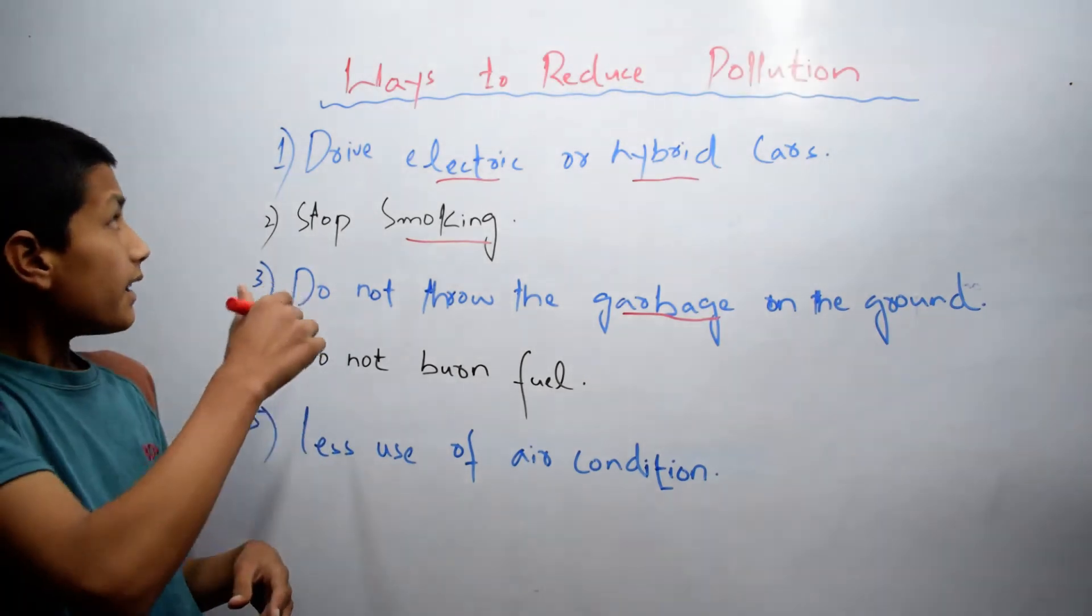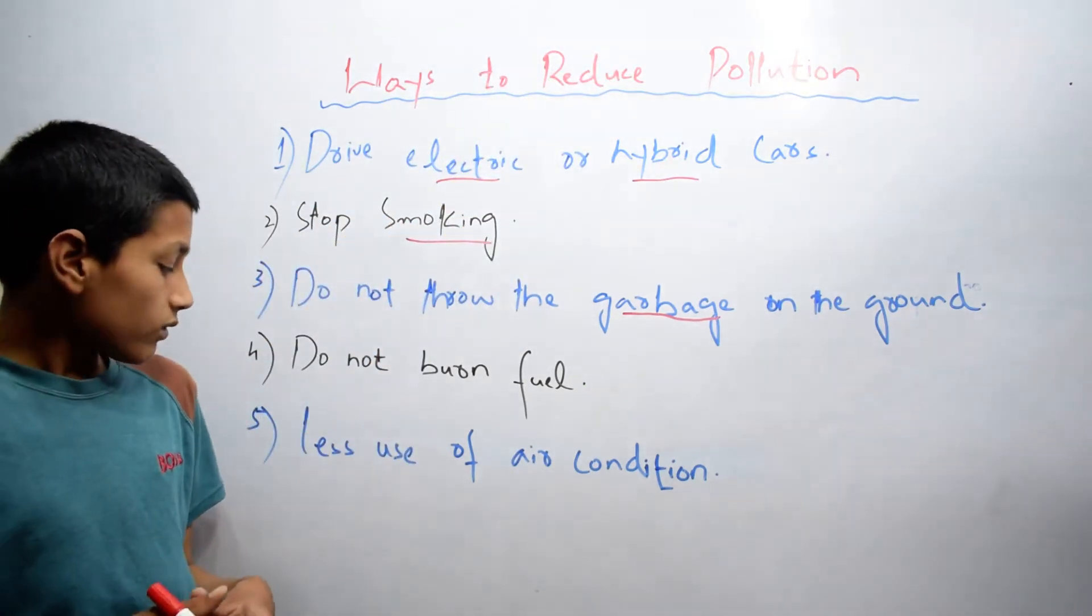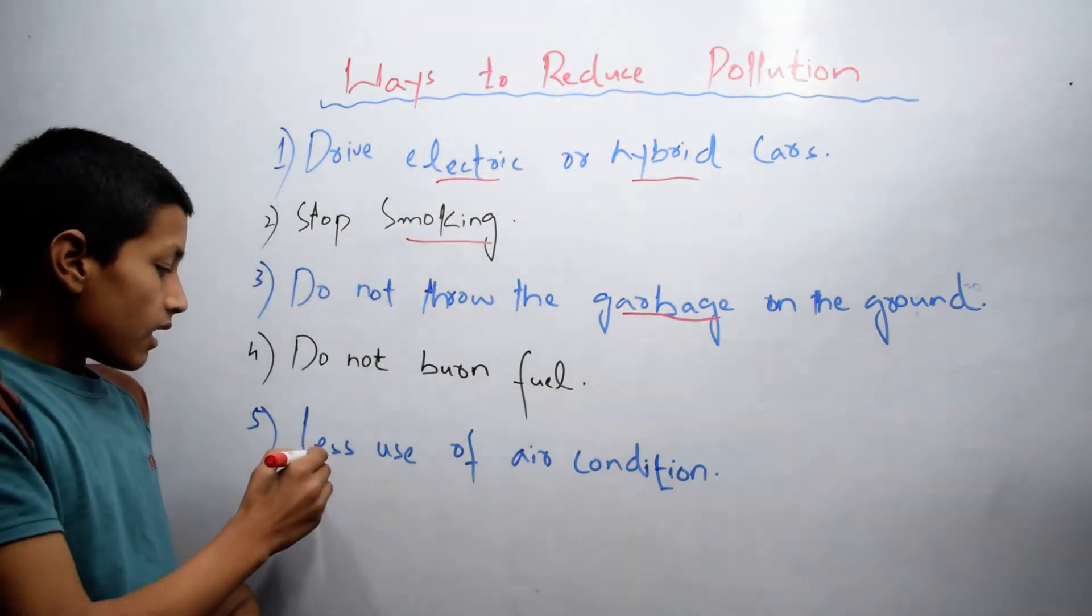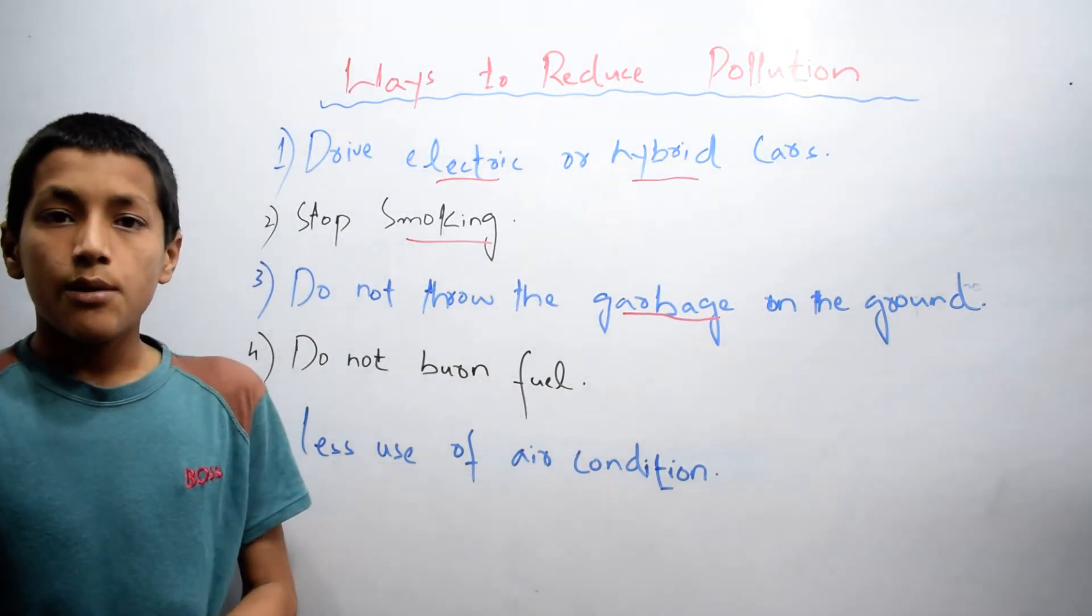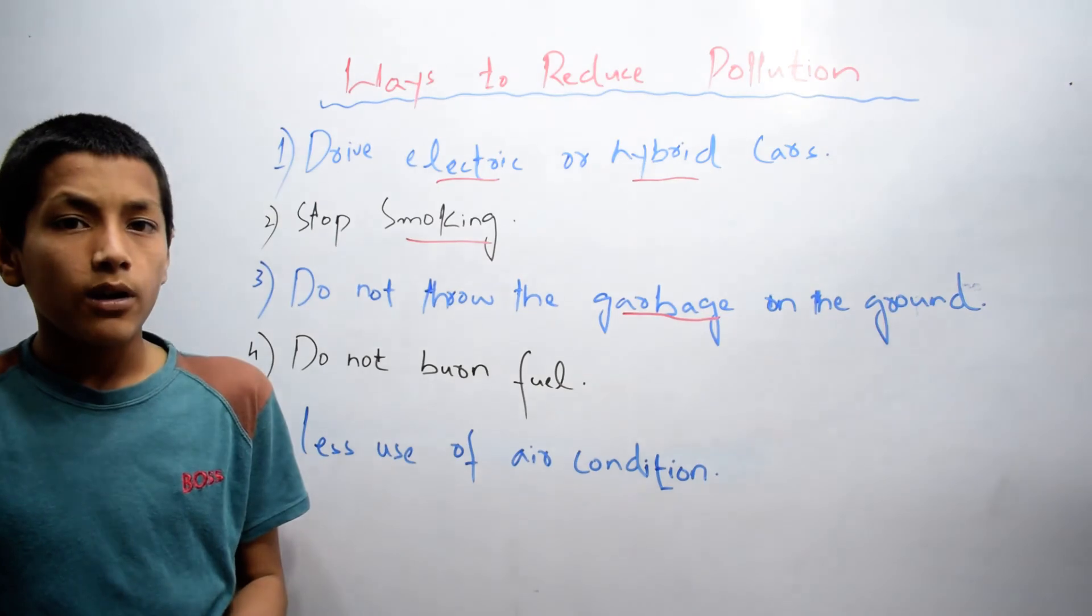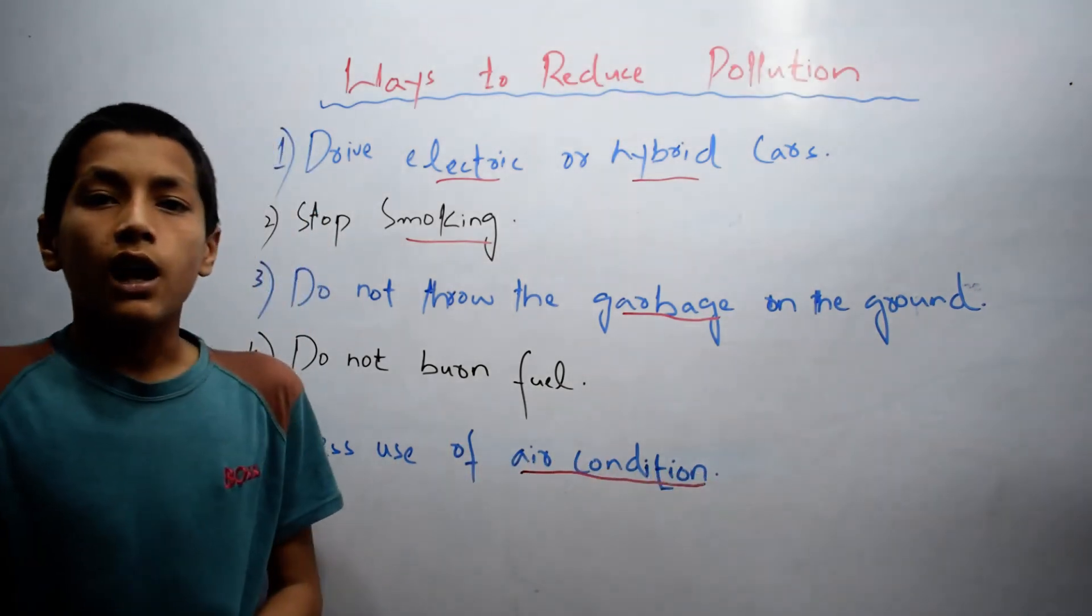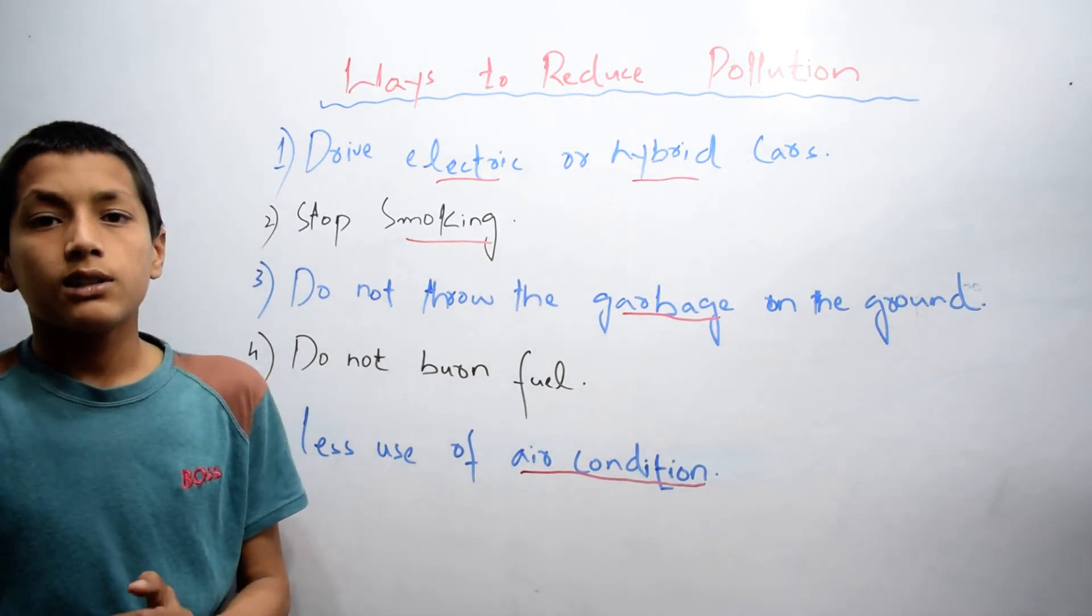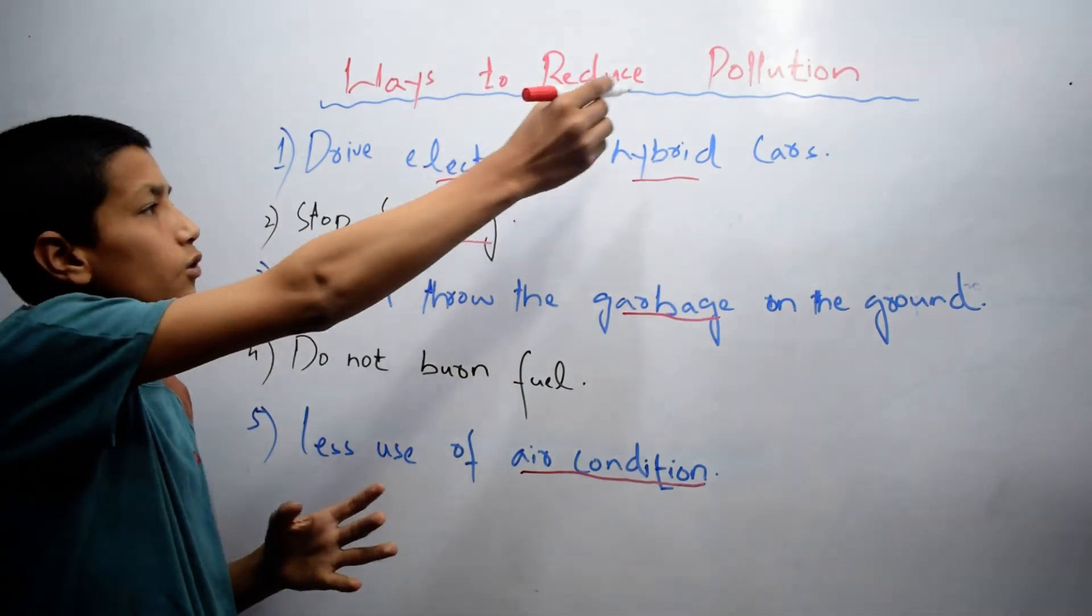The last way to reduce pollution is less use of air conditioning. If you use more air conditioning, air conditioners release carbon dioxide and other gases which cause pollution. This is another way to reduce pollution.